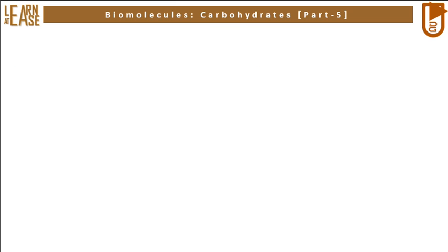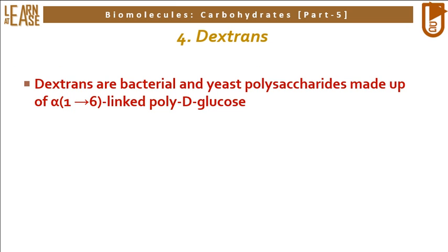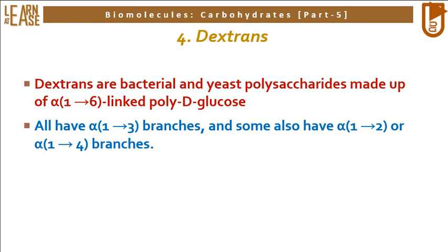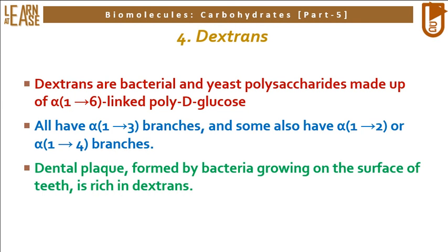The fourth example of homopolysaccharide is dextrin. Dextrins are bacterial and yeast polysaccharides made up of alpha-1-6-linked poly-D-glucose. All have alpha-1-3 branches, and some also have alpha-1-2 or alpha-1-4 branches. Dental plaque, formed by bacteria growing on the surface of teeth, is rich in dextrins.